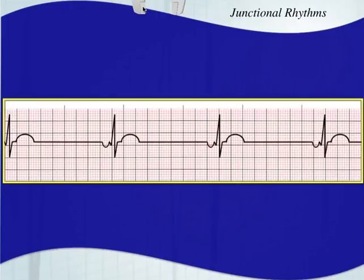Here's an example of a junctional escape rhythm that has an inverted P wave and it's antegrade. You notice there's almost no PR segment, so you have a very short PR interval. That's how you identify a junctional rhythm — you only have one P wave for every QRS complex, and the PR interval, if it exists, needs to stay consistent. The inversion of the P wave is very often present with a junctional escape rhythm.